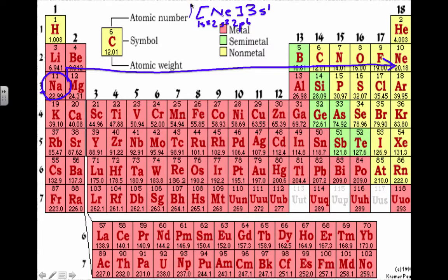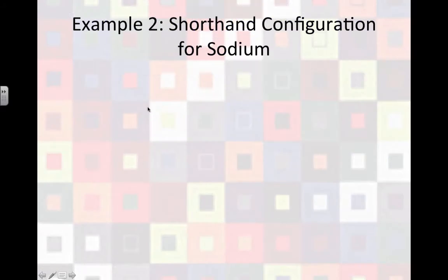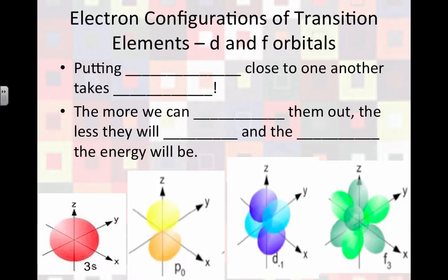So this part right here is the shorthand configuration, because neon is holding the place of all of the rest of these. Pretty neat, huh? Our shorthand configuration for sodium is to put neon in square brackets, and then finish it off by writing 3s1, and we're done. That's a lot easier, isn't it? Especially for really large elements with a lot of electrons.